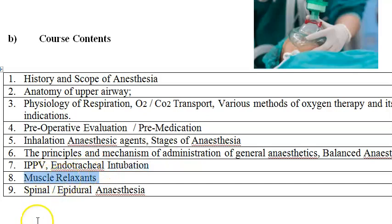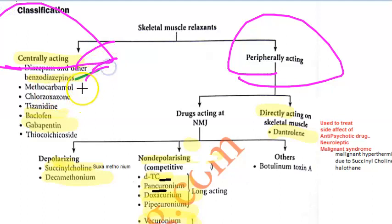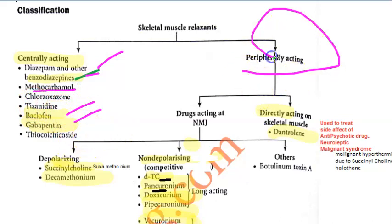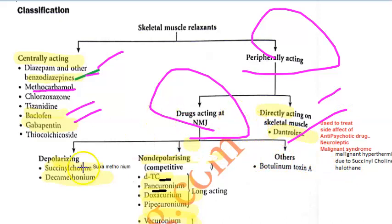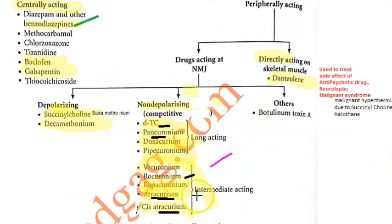Then muscle relaxants — skeletal muscle relaxants. You have centrally acting ones like diazepam, other benzodiazepines, baclofen, gabapentin, and methocarbamol. Peripherally acting agents include those acting directly on the muscle like dantrolene, and those acting at the neuromuscular junction. At the NMJ: depolarizing agents include succinylcholine (suxamethonium) and decamethonium; non-depolarizing competitive agents include D-tubocurarine, pancuronium, rocuronium, atracurium, cis-atracurium, and mivacurium — all these names you should know.